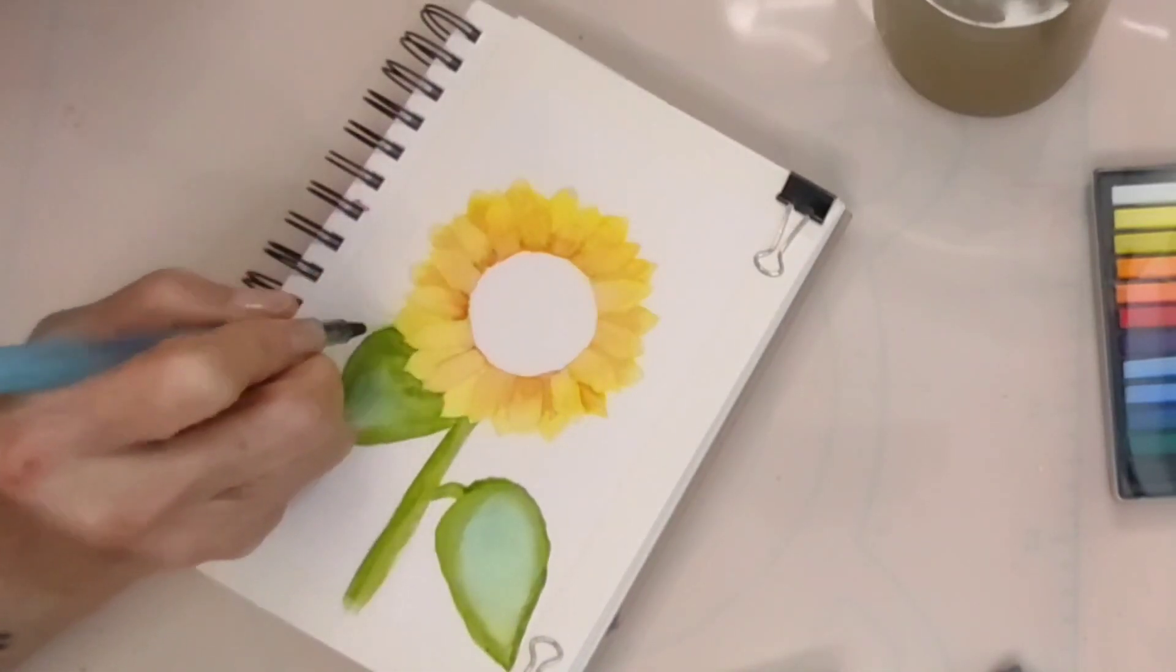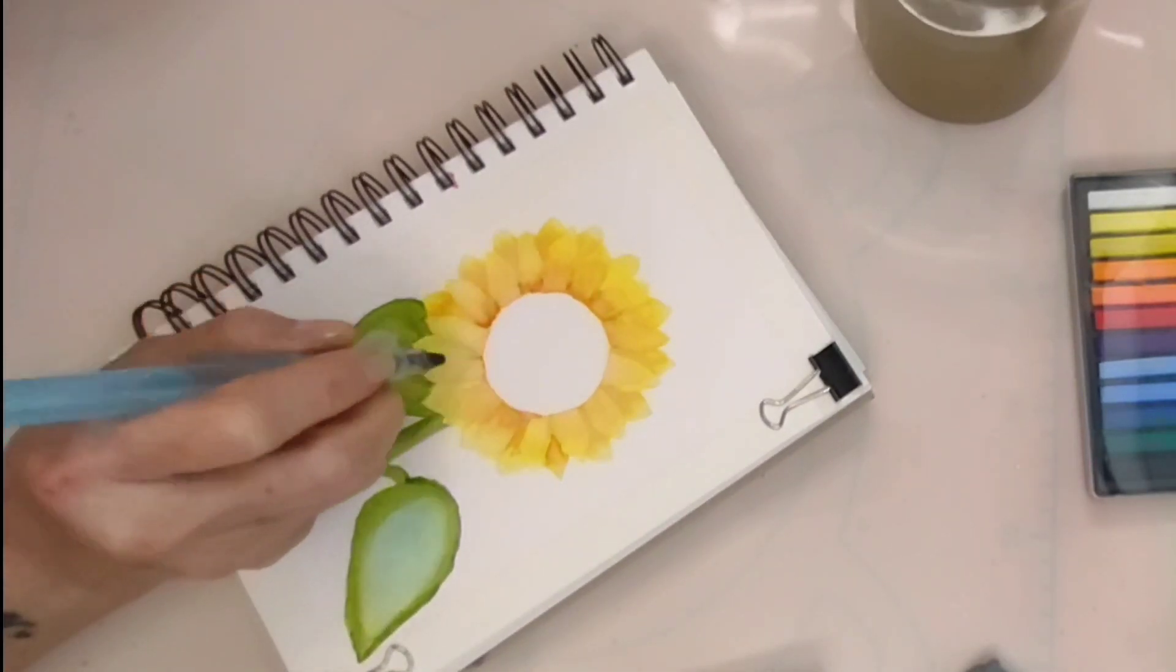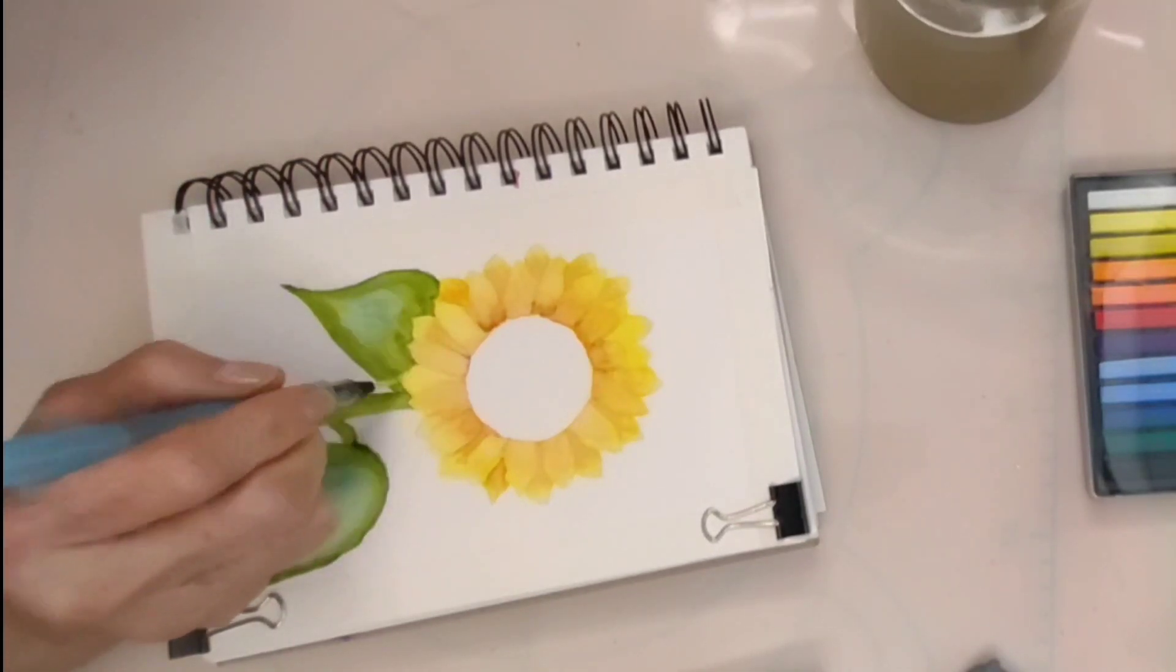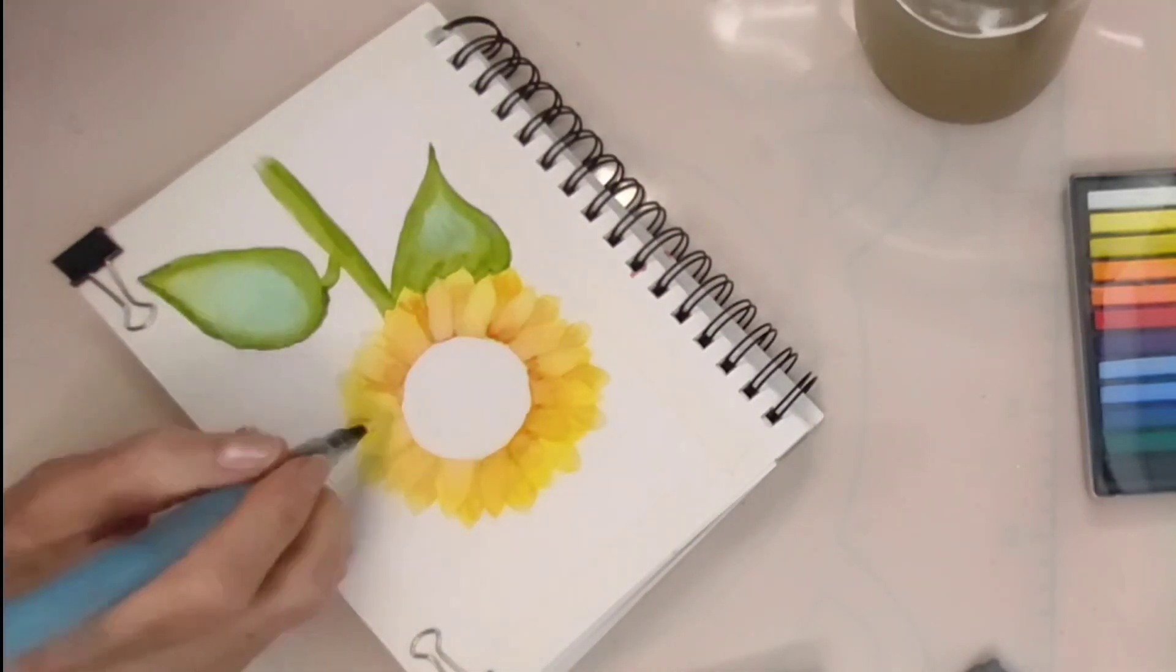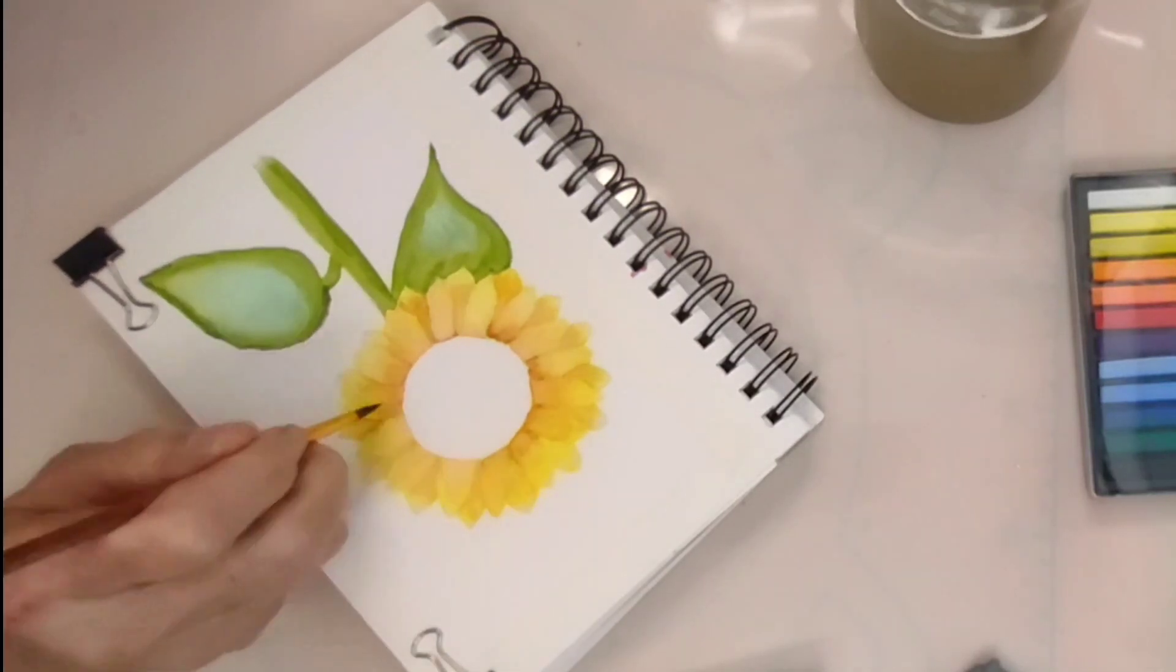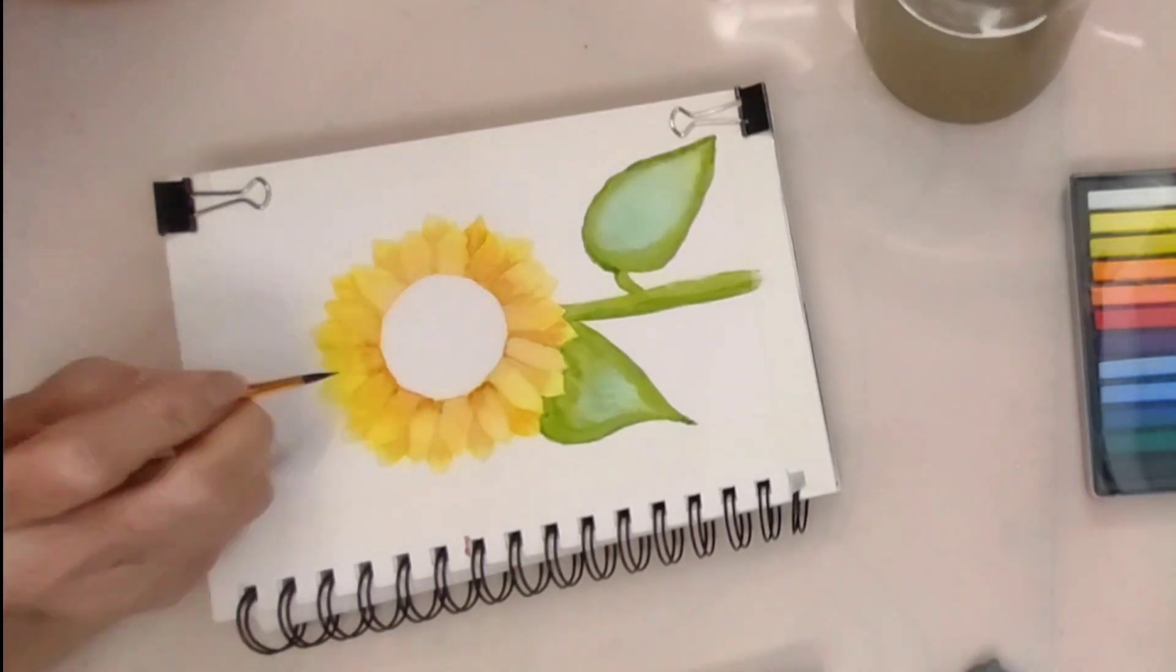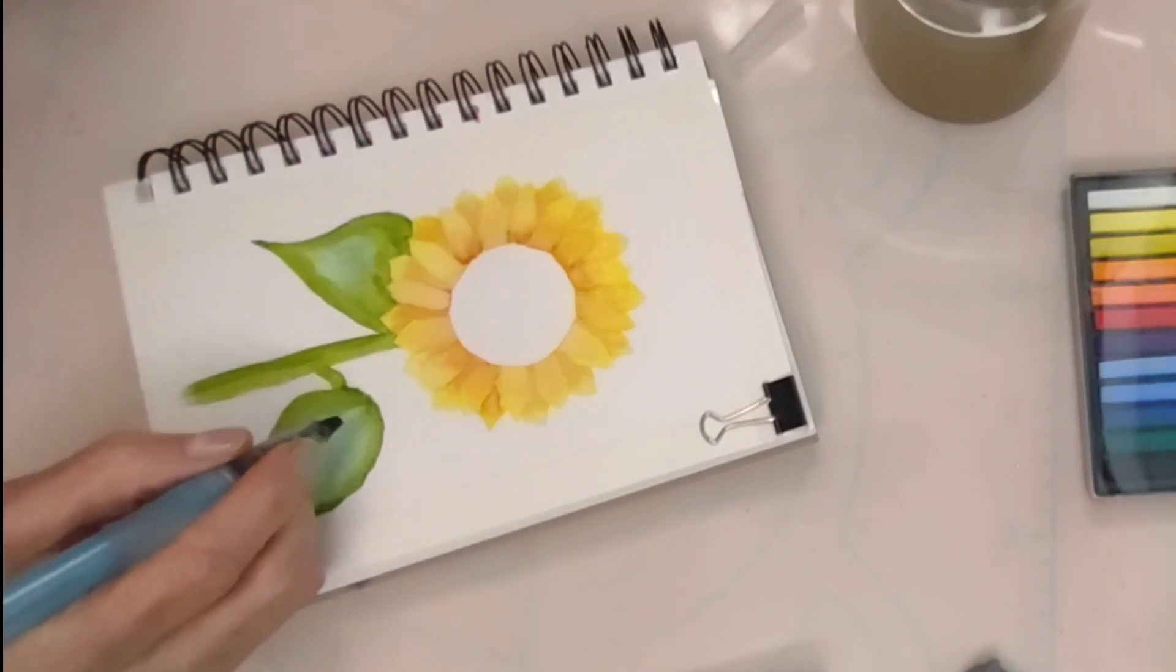The symbolic significance of sunflowers has also been immortalized in art and literature. One of the most famous examples is Vincent van Gogh's series of sunflower paintings. Van Gogh was captivated by the sunflower's beauty and symbolism, considering it a symbol of gratitude and friendship. His vibrant and expressive paintings have become iconic representations of the joy and positivity associated with sunflowers.